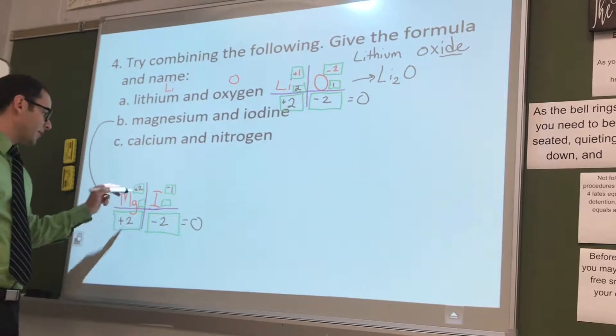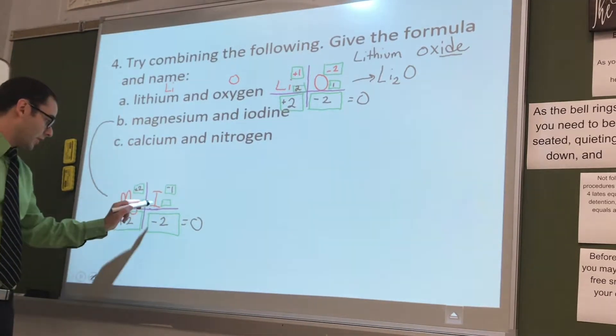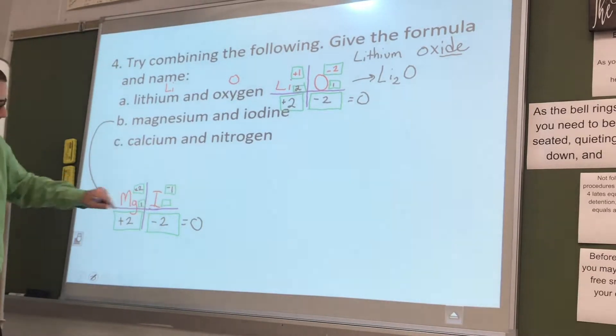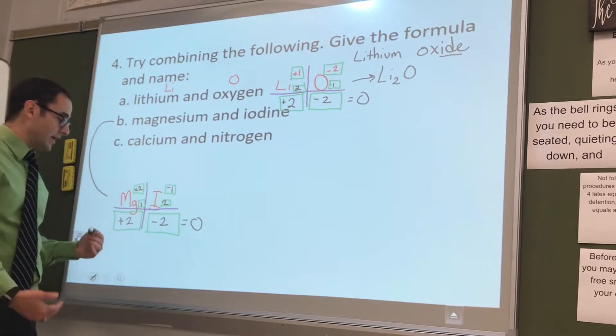So, for magnesium, how many magnesiums do we need to make it plus two? Yeah, we just need one. So, it's just going to be a one down there. And then, over here, we're going to put two, because negative one times two gives us that negative two, right?